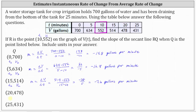Point Q changes again: T₂ = 20 and V₂ = 478. The slope of the secant line equals the change in volume divided by the change in time, which is (478 − 552) ÷ (20 − 10). Simplifying: −74 ÷ 10 = −7.4 gallons per minute.